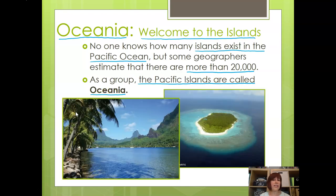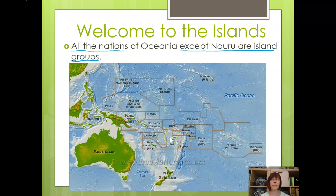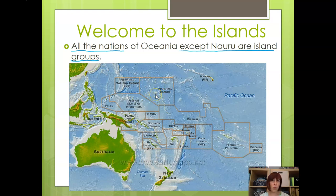Some islands are large with lots of people living there, while others are very tiny and uninhabited. All of the countries in Oceania, except for Nauru, are island groups. For example, the Marshall Islands is not just one island — it's a whole bunch of small islands that make up one nation.